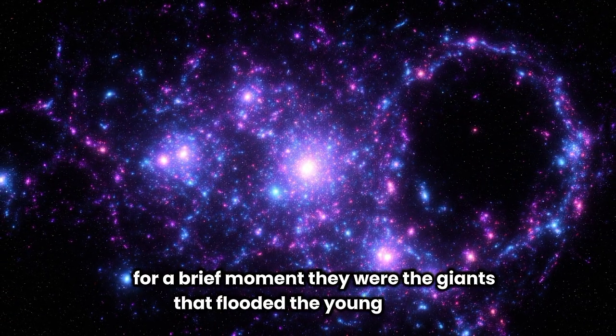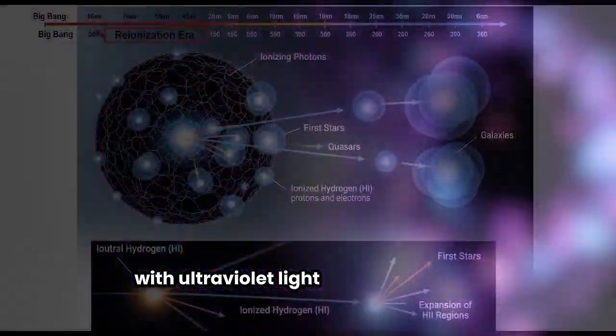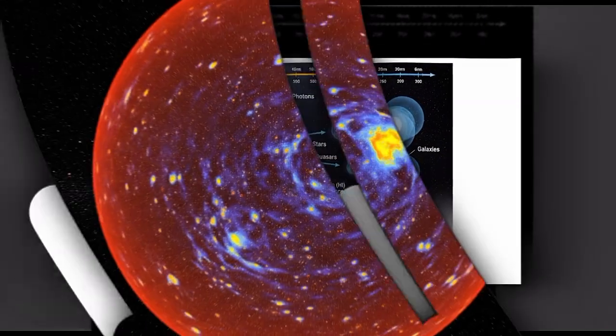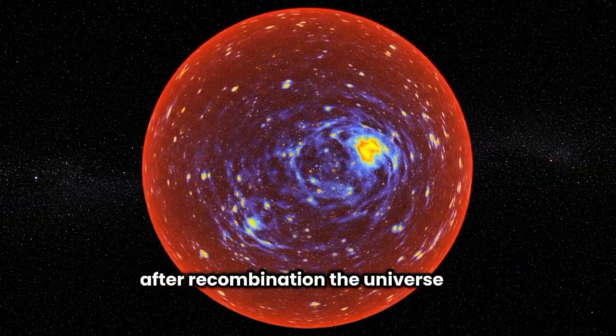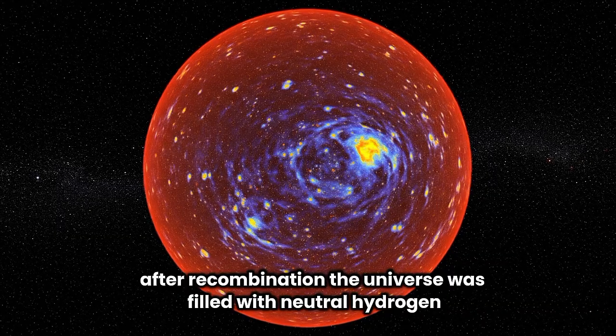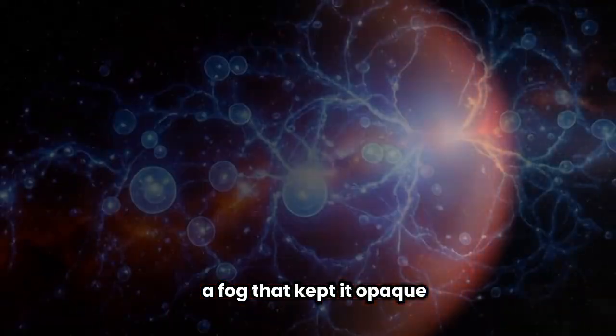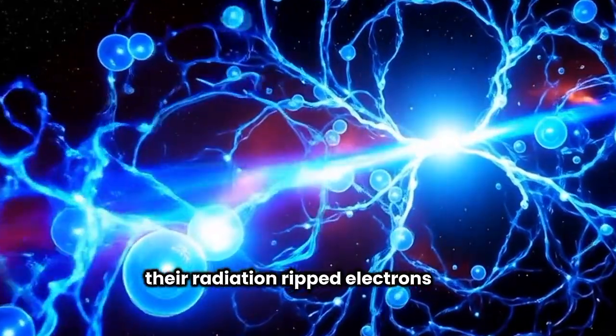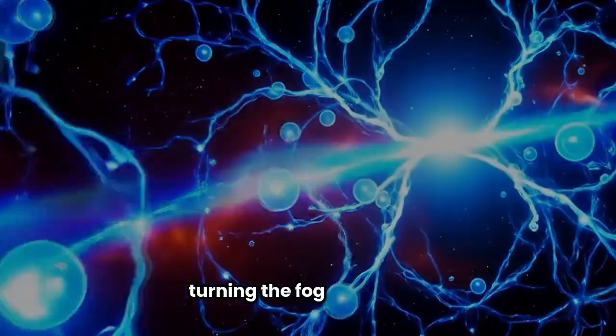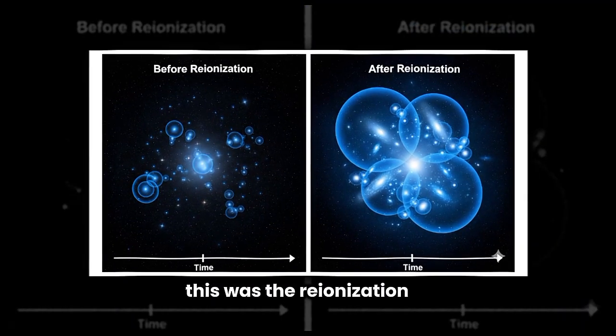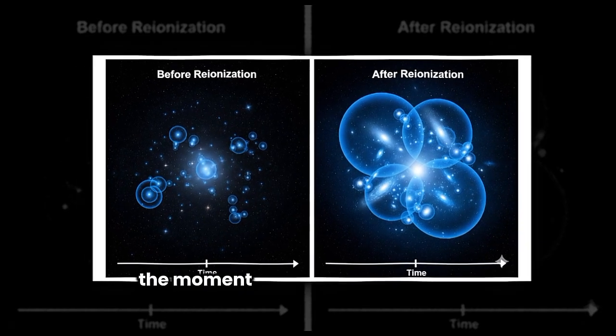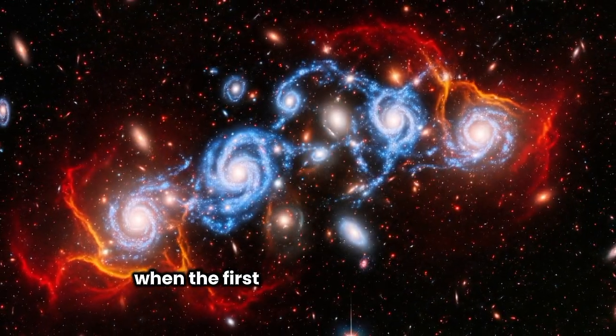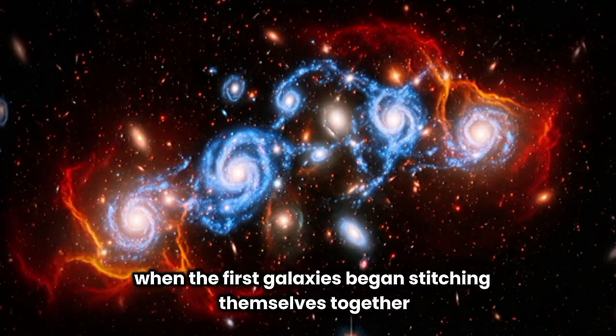For a brief moment, they were the giants that flooded the young cosmos with ultraviolet light. That light changed everything. After recombination, the universe was filled with neutral hydrogen, a fog that kept it opaque. But as the first stars came alive, their radiation ripped electrons from hydrogen atoms, turning the fog transparent. This was the re-ionization era, the moment the universe shifted from darkness into light, when the first galaxies began stitching themselves together.